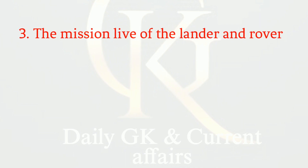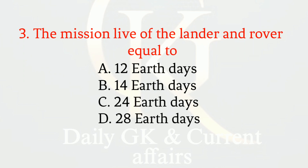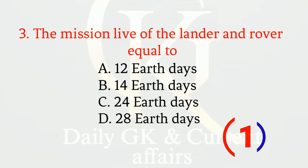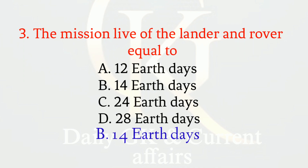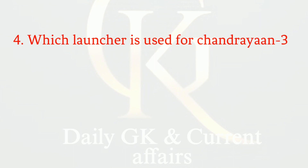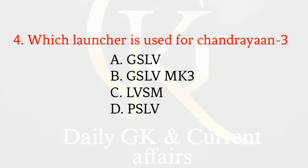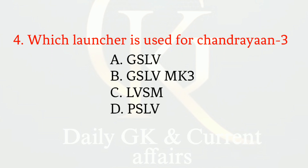The mission life of the lander and rover is equal to — the correct option is B: 14 lunar days. Which launcher is used for Chandrayaan-3? The correct option is B: LVM3 MK3 (GSLV MK3).